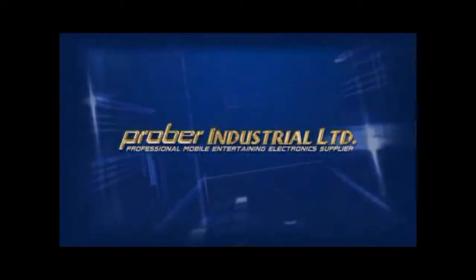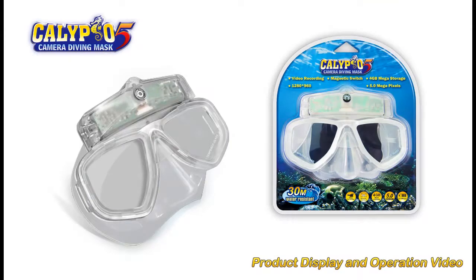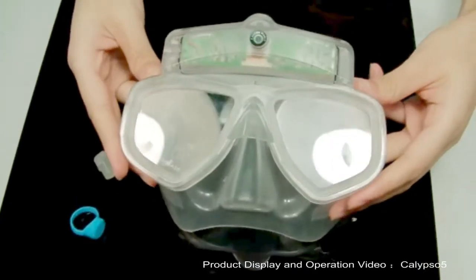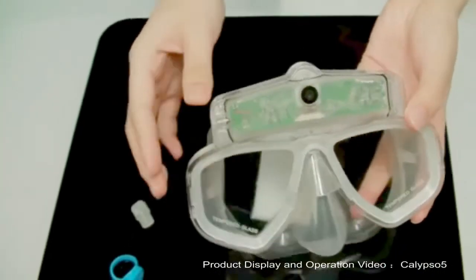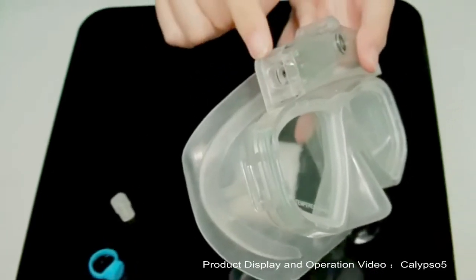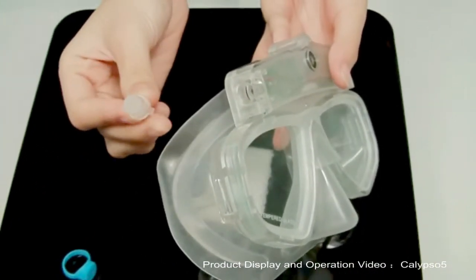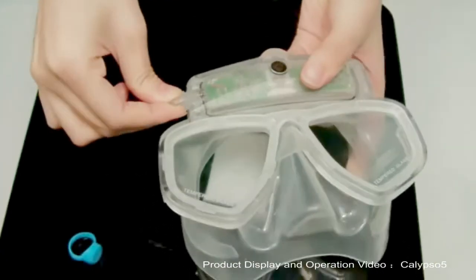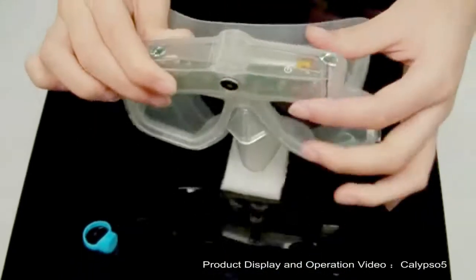Welcome to Prava Industrial Ltd. A product video of Calypso 5. Step 1: Insert the rubber plug into the USB hole and make sure it's fully and tightly inserted to avoid water entering.